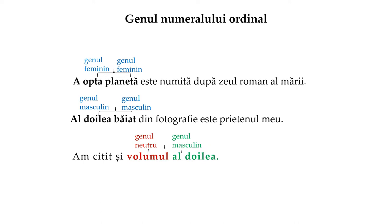Ca în exemplu: al doilea băiat din fotografie este prietenul meu. În situația în care numeralul ordinal însoțește un substantiv de genul neutru, atunci este folosit cu forma de genul masculin, ca în exemplu: am citit și volumul al doilea. Substantivul volumul este de genul neutru, iar numeralul ordinal al doilea este formă de genul masculin.